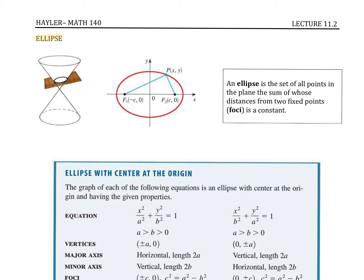An ellipse, if you're looking at a conic section — the conic section is this 3D object. If we put a 2D strip, think of a piece of paper through it, the item that it creates, that sort of circular type of object, is what we would call the ellipse.